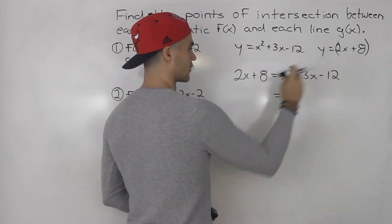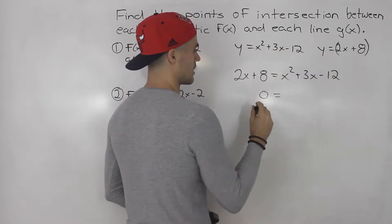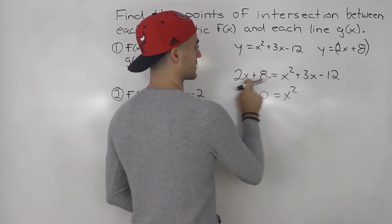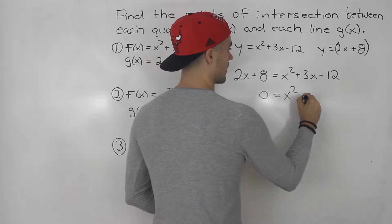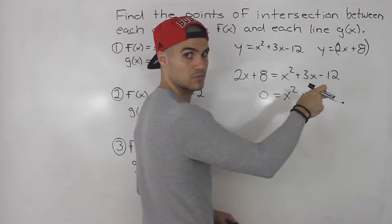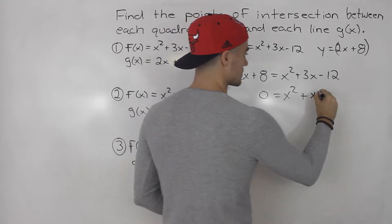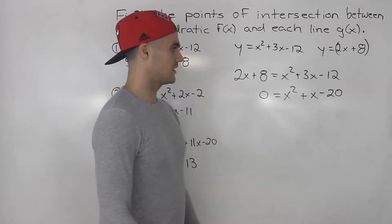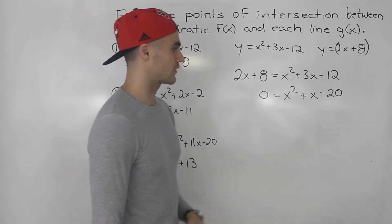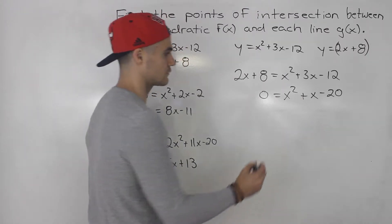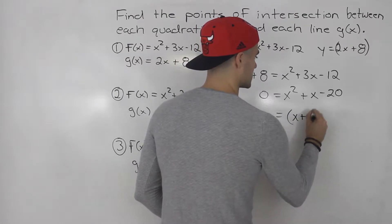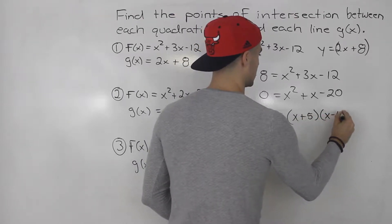From here, notice this is just an equation to solve. Bring everything over to the right side. We'd have x squared, then 3x minus 2x gives us positive x, and negative 12 minus 8 gives us negative 20. Now we just have a quadratic equation, so you could throw it into the quadratic formula or try to factor it first. It factors into x plus 5 times x minus 4.